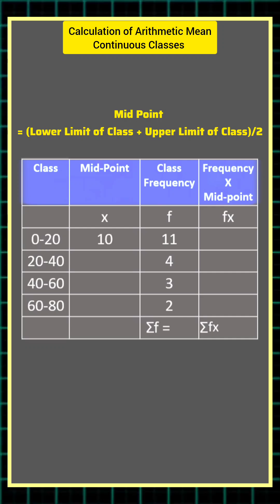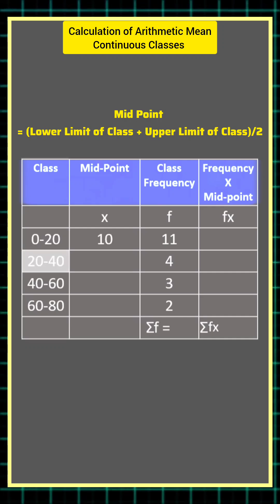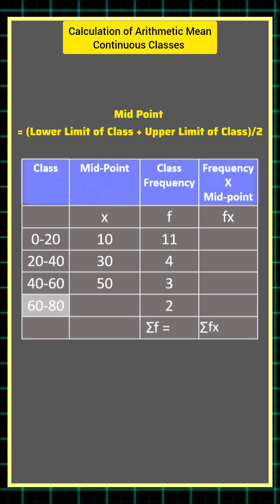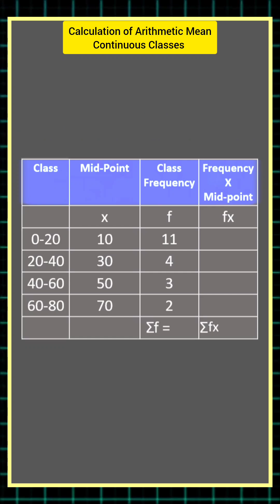For the class 0 to 20 midpoint is 10, for 20 to 40 midpoint is 30, for 40 to 60 midpoint is 50 and for 60 to 80 the midpoint is 70.